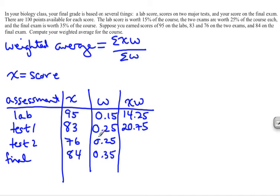And then 76 times 0.25, and that means a score of 19. And then the last one is 84 times 0.35, and that gets you a 29.4.